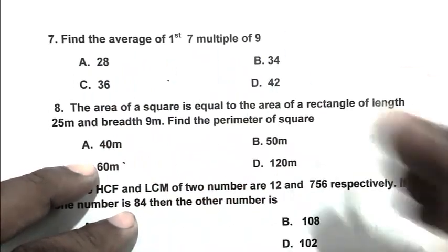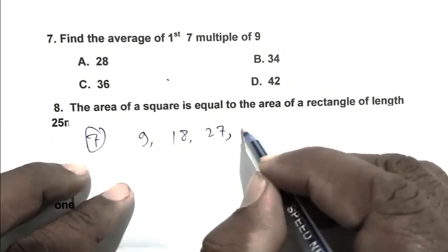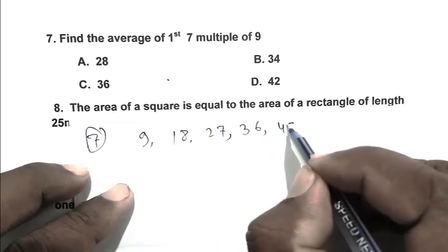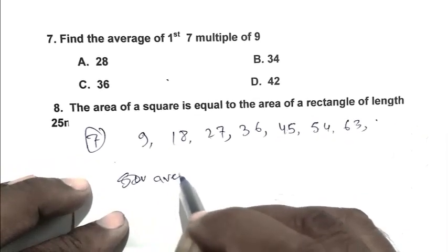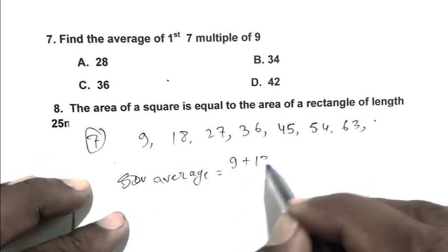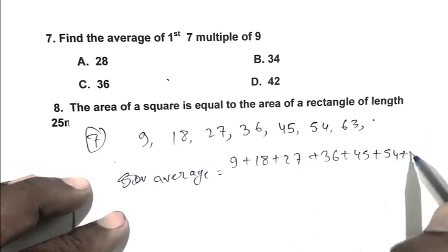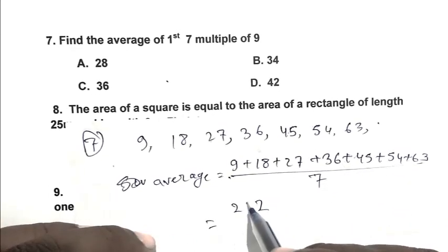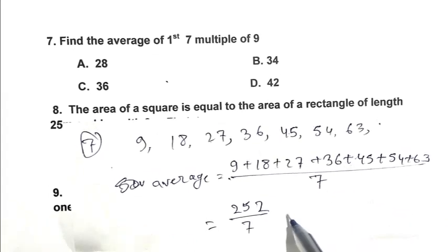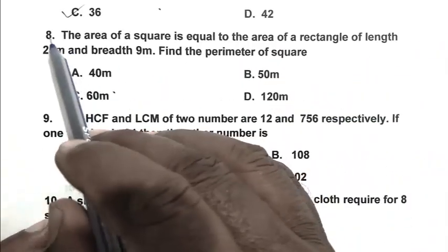Question number seven: find the average of the first seven multiples of nine. The first seven multiples of nine are 9, 18, 27, 36, 45, 54, and 63. The average is (9 + 18 + 27 + 36 + 45 + 54 + 63) divided by 7, which equals 252 divided by 7, that is 36. C is the right answer.